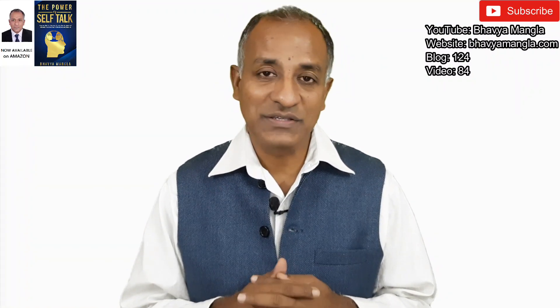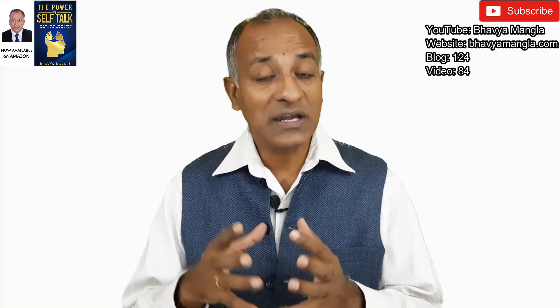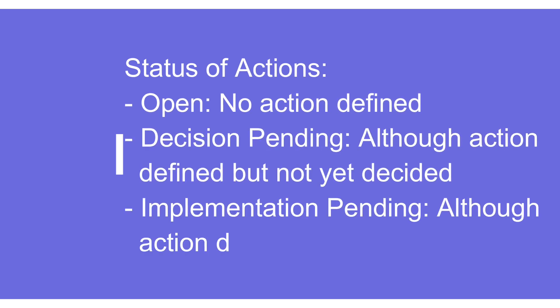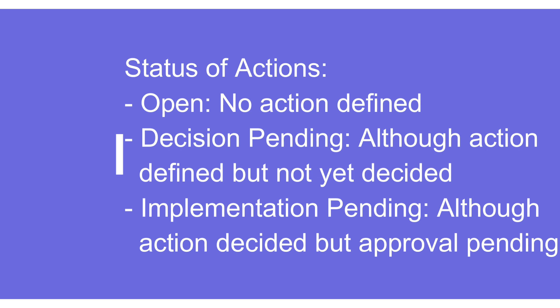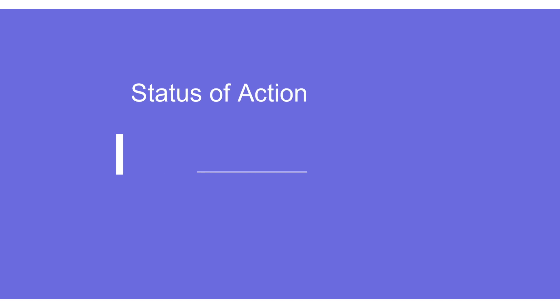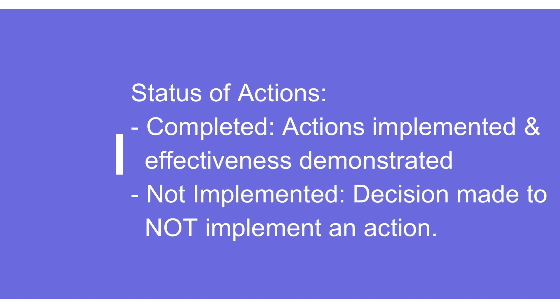There can be five or six different stages for the status of actions. First is 'open' — no action defined yet. Second is 'decision pending' — an action is defined but not yet decided upon. Third is 'implementation pending' — the action is decided but awaiting approval, perhaps from top management or the customer. Fourth is 'completed' — the action is implemented and effectiveness demonstrated. Fifth is 'not implemented' — a decision has been made not to implement, due to lack of capability or technical know-how.